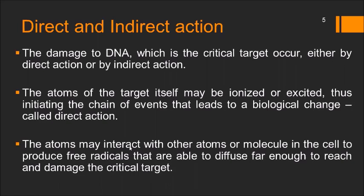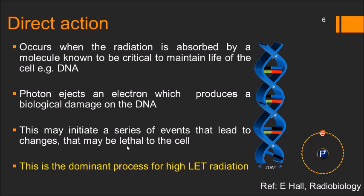Direct action occurs when radiation is absorbed by a molecule critical to maintain the life of the cell, which is the DNA. A photon comes and interacts and ejects an electron that produces biological damage to the DNA. This may initiate a series of events that can lead to changes lethal to the cell. Please note this is the dominant process for high LET radiation — most damage from high LET radiation happens by direct action.